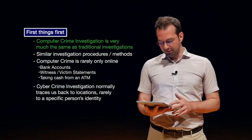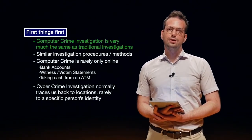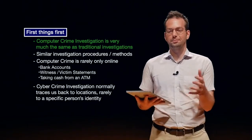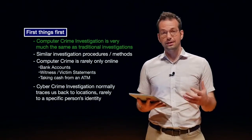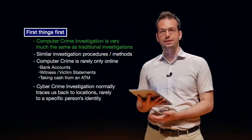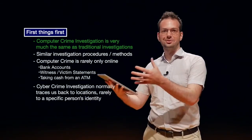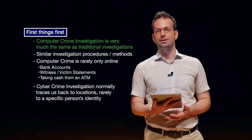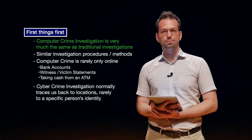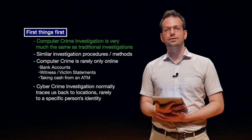Computer crime investigation is very much the same as traditional investigations, and a lot of people don't really think that. Because we're dealing with a computer system, they think it's very different from, for example, a crime scene in a house where you might have different pieces of evidence. But a house that is a crime scene is very much the same as a computer that's a crime scene — they both contain potential pieces of evidence. We have to go in, look at those pieces of evidence, and make sense of them in the context of our investigation.